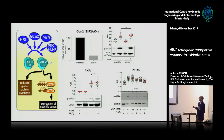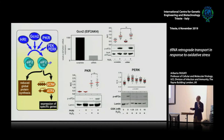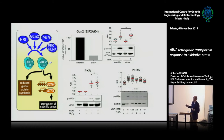Using a selective GSK inhibitor of PERK, we saw a reduction in tRNA retrograde transport and a reduction in eIF2-alpha phosphorylation. The signal did not return exactly to baseline, but there was a significant effect. This pointed to PERK as an important regulator of this pathway.